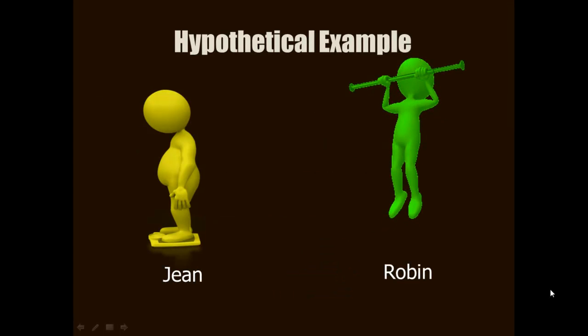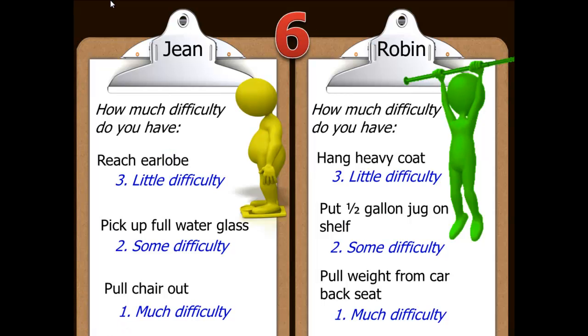Recall the androgynous brightly colored Gene and Robin. I took you through an exercise in which you took what you could intuit about the difficulty of several shoulder items, and also what I told you about how Gene and Robin responded to each item, and then you made an educated guess about who had the greater shoulder function.